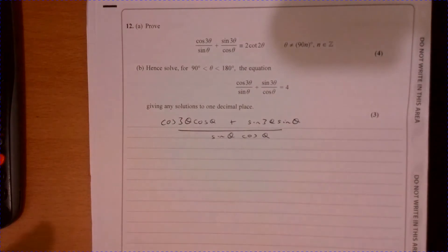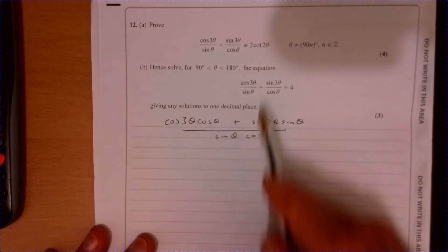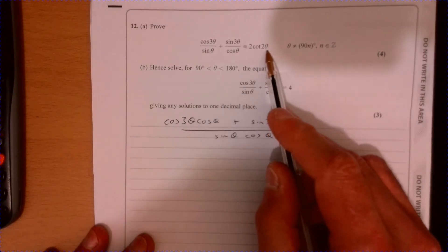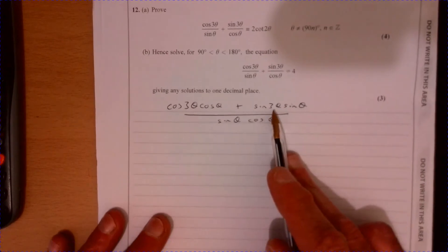To be honest with this question, you've just got to have the confidence to go with it. There's a clue up here: it's got a 2θ in the answer, that's where we're trying to get to. It's got cot, we'll work that out later.